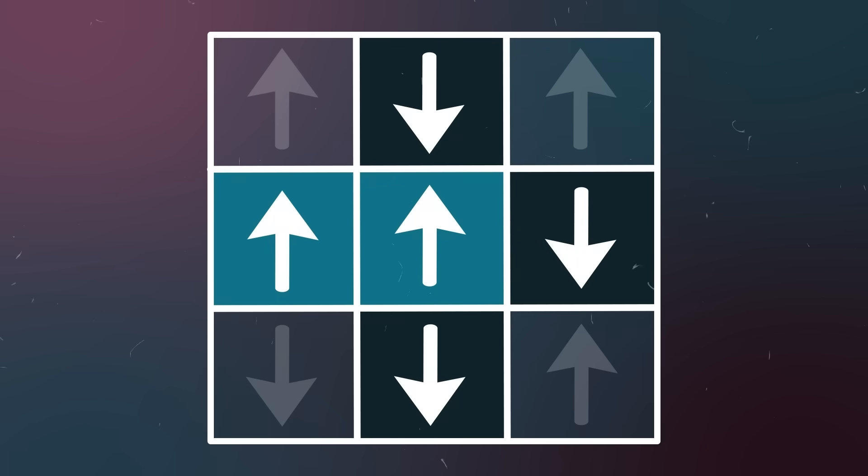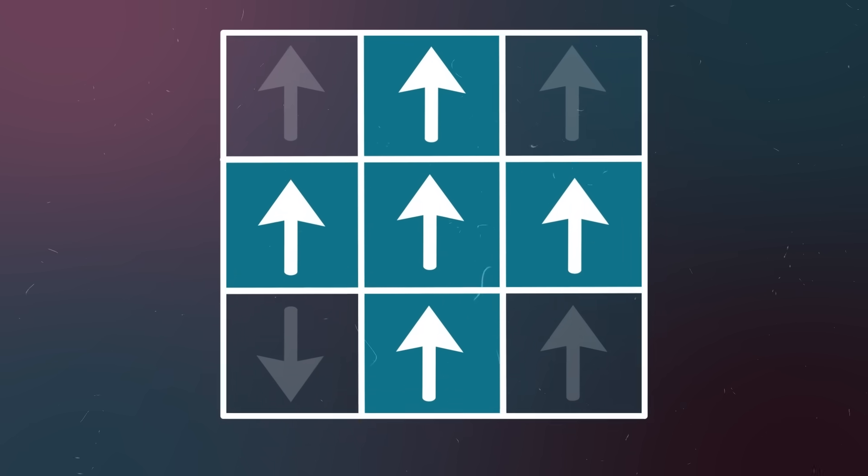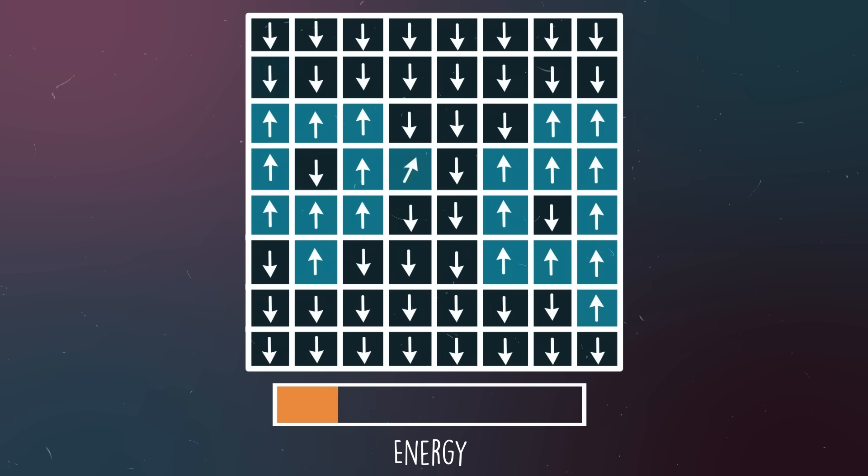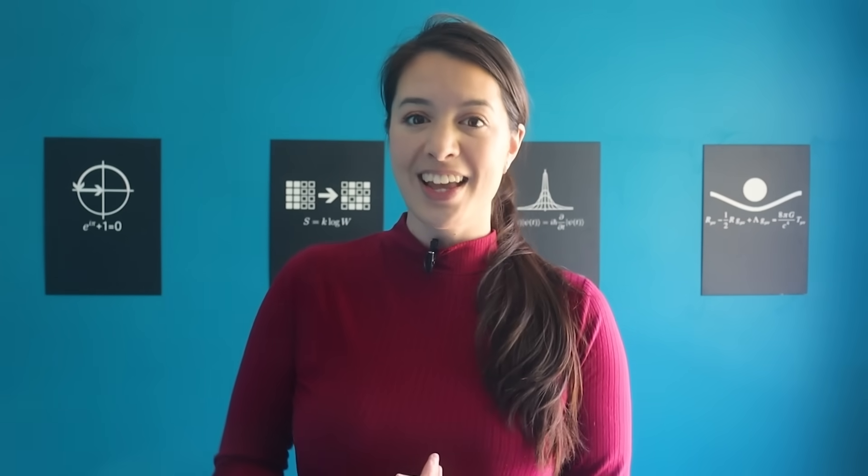Each dipole produces its own local magnetic field, which can influence its neighbors. Neighboring aligned dipoles have lower energy, whereas neighboring anti-aligned dipoles have higher energy. The total energy of the system is determined by the total alignments of all the dipoles. But why do we care about the system's energy?